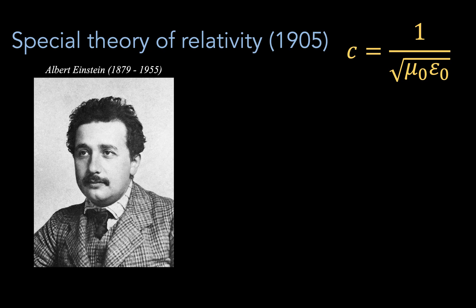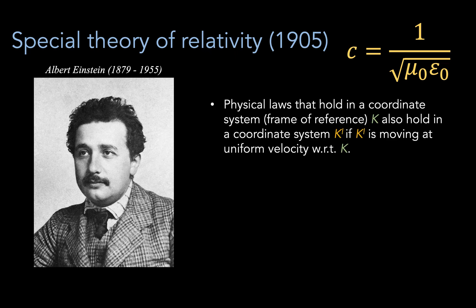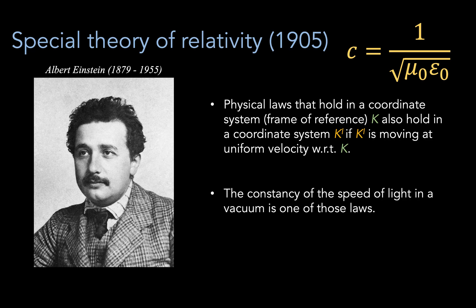The special theory of relativity has two main postulates. The first is that physical laws are constant between all inertial reference frames, and that one of these laws is the constancy of the speed of light in a vacuum. When you mix these two together, you get the special theory of relativity.